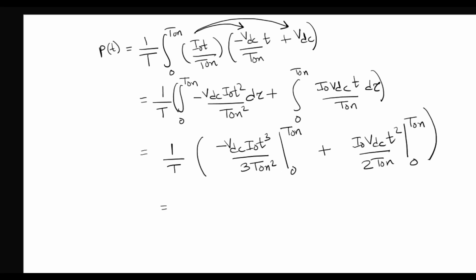Since the lower limit is 0, we can simply put in T on in place of small t and get the expression as minus VDC I0 times T on cubed over 3 T on squared, plus I0 times VDC times T on squared over 2 T on.